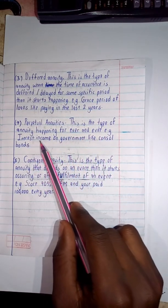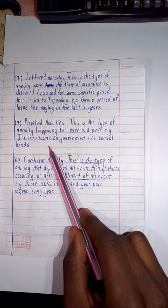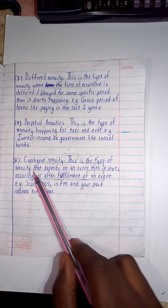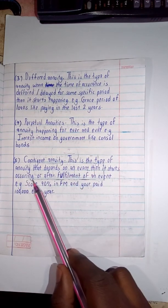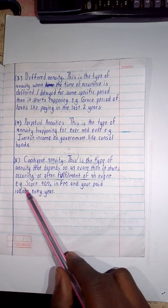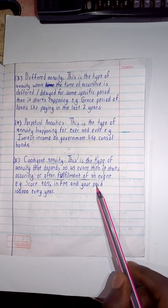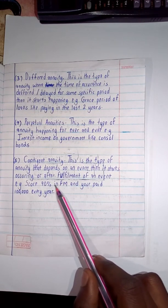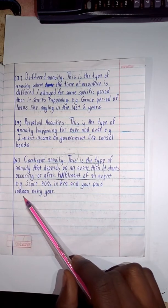Then we are having contingent annuity. This is the type of annuity that depends on an event then it starts occurring or after fulfillment of an event. For example, if I told you to score 90 percent in financial management you'll be paid a hundred thousand every year, so meaning that it's after this fulfillment of the event that you start earning the hundred thousand annuities.